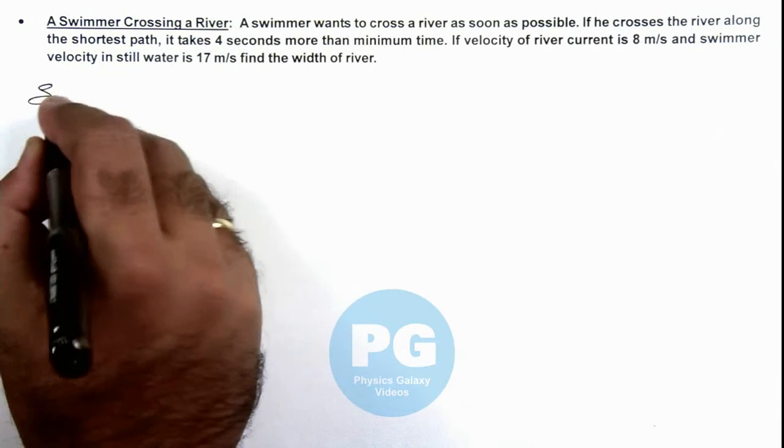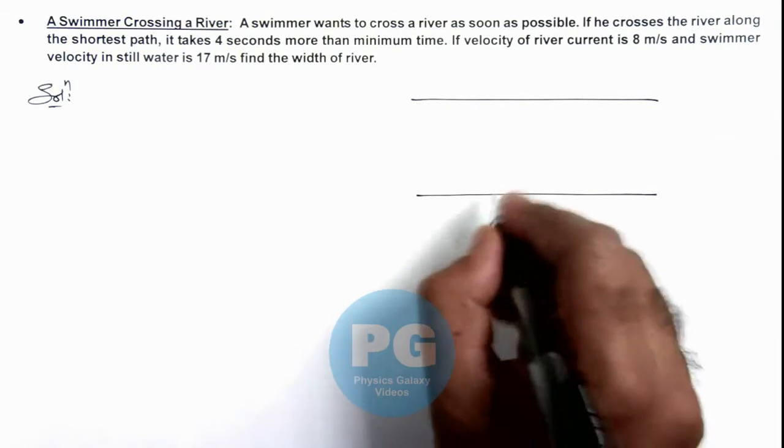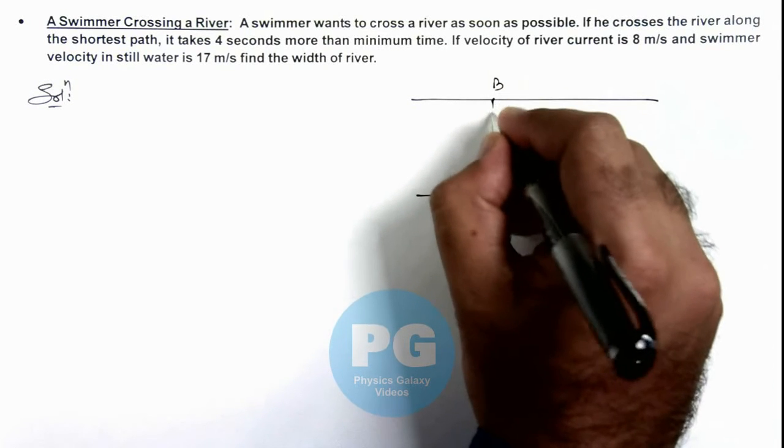Here in this situation, we can see if this is the river. We know well if a swimmer crosses the river along the shortest path.